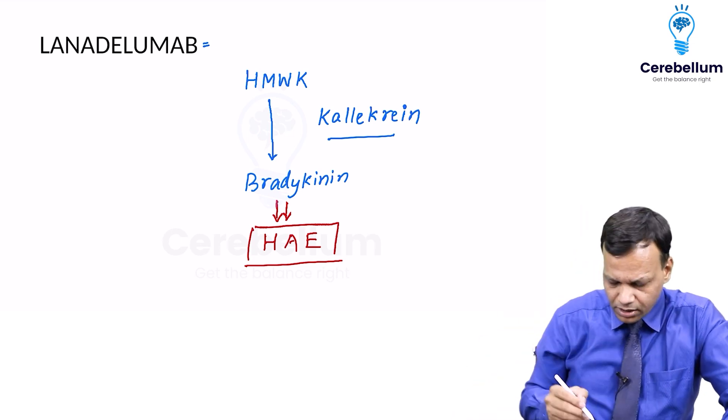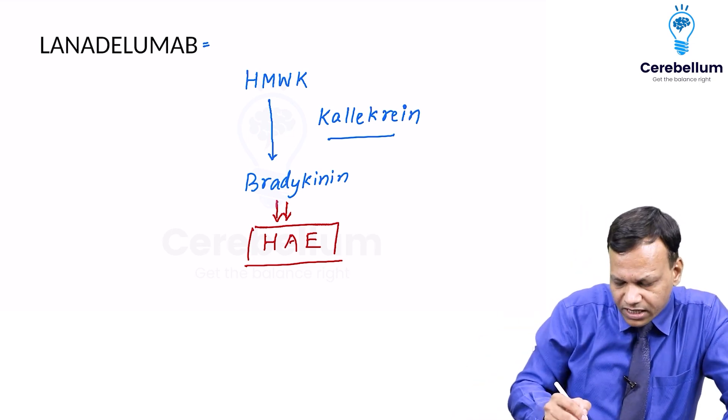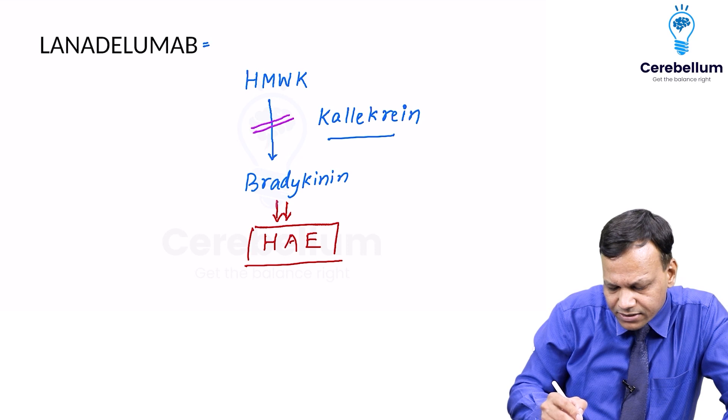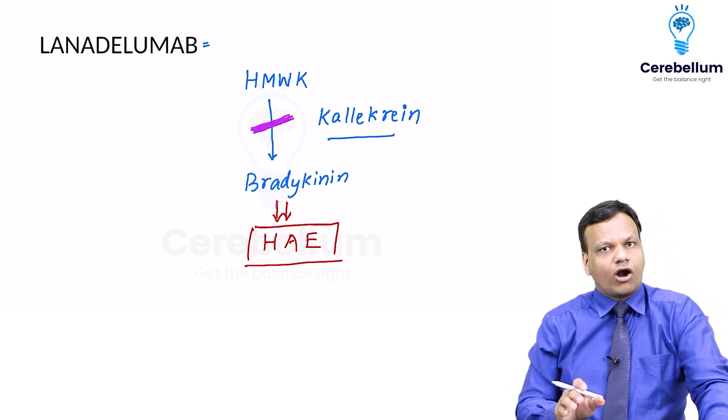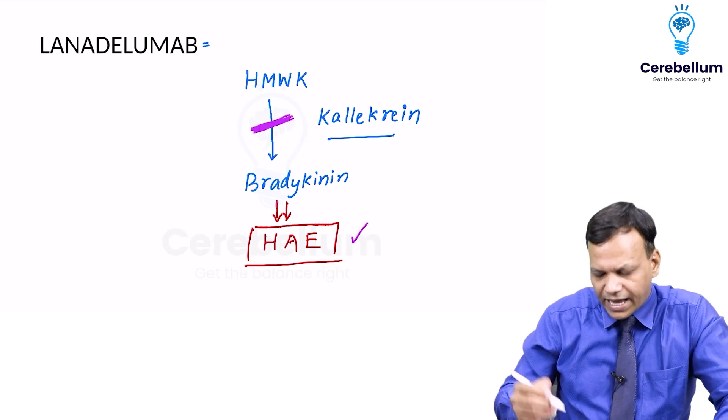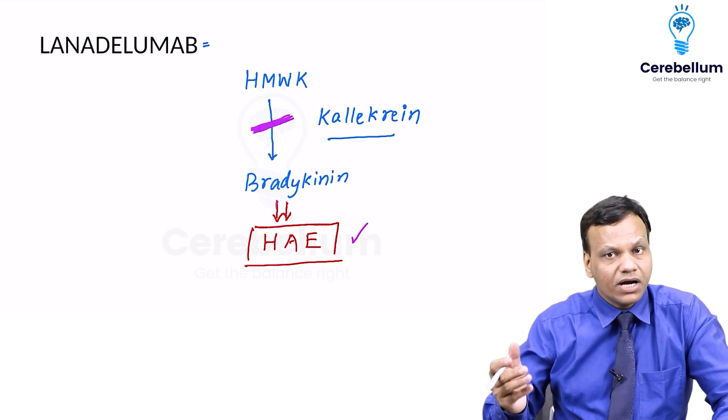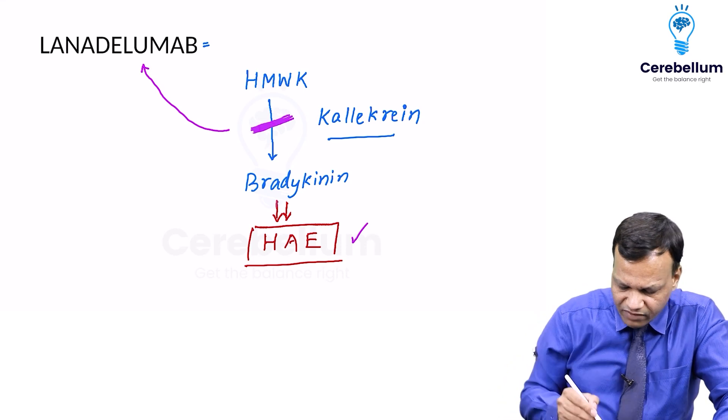So what we have done is we have developed a drug which can inhibit kallikrein. So if we inhibit kallikrein, then bradykinin will not be produced, so we can treat hereditary angioneurotic edema. So this is a drug, Lanadelumab,